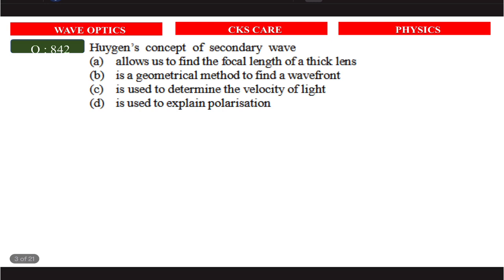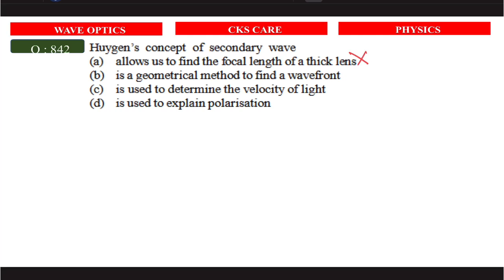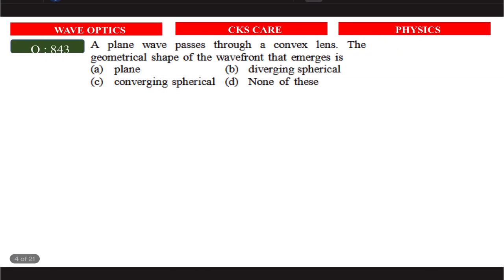The next question involves the whole concept of the secondary wave — this is the geometrical method of finding the wavefront. Next, question 843: a plane wave passes through a convex lens. The geometrical shape of the wavefront that emerges is a converging spherical wave, because a convex lens converges the wave to a point.